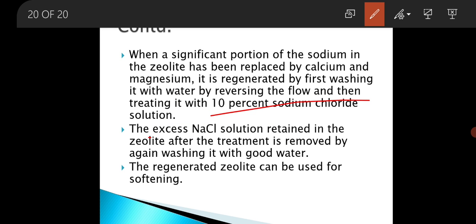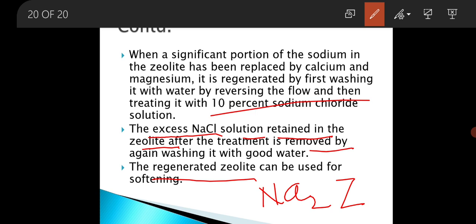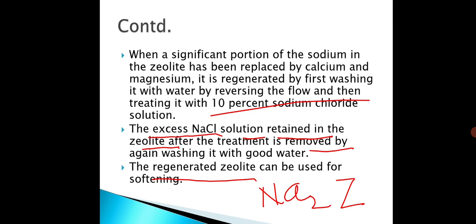The excess NaCl solution which is retained in the zeolite is removed by again washing it with good water. The regenerated zeolite, Na2Z, can then be used again for softening of a new sample of raw water. That is all about the zeolite or base exchange process.